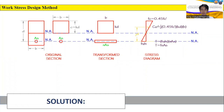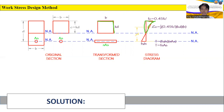For the compression force CC, its value equals the area of the triangular stress block multiplied by the width of the concrete section. The area of the triangle is one-half base times height, where the height is 0.45 FC' and the base is KD, multiplied by B. This gives us the compression force CC equal to one-half times 0.45 FC' times KD times B.